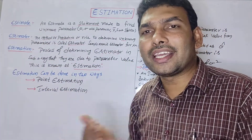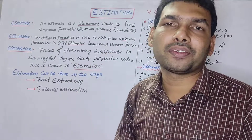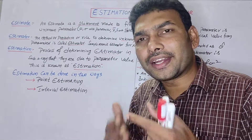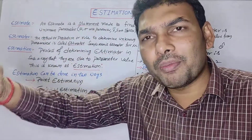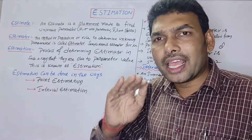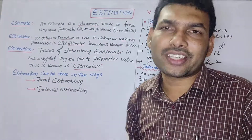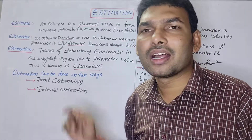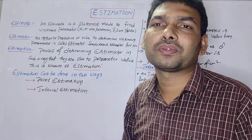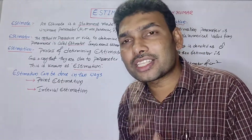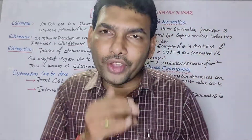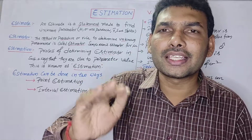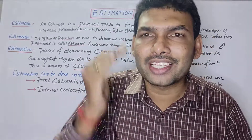Estimation is the process of determining an unknown parameter value using a known statistic — using a sample-related measurement. This is called estimation. Estimation can be done in two ways: one is point estimation, and another one is interval estimation.